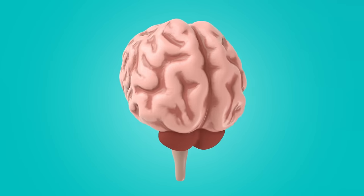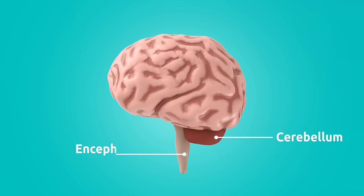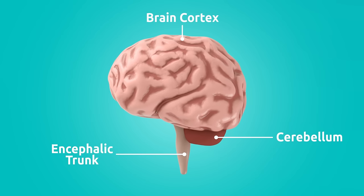The human brain is divided into three parts: the cerebellum, the encephalic trunk, and the brain cortex.